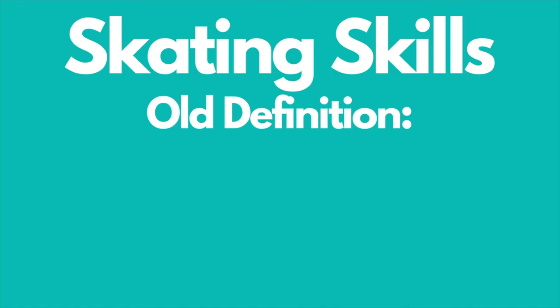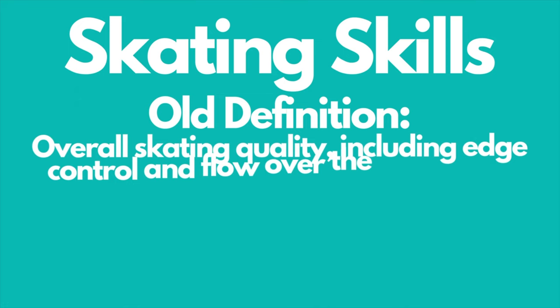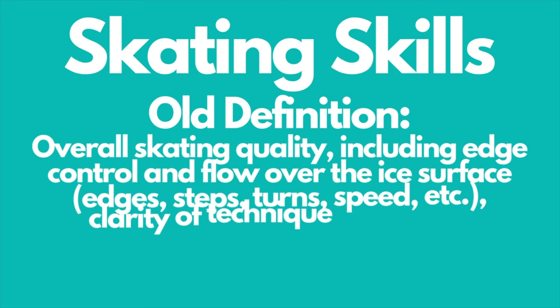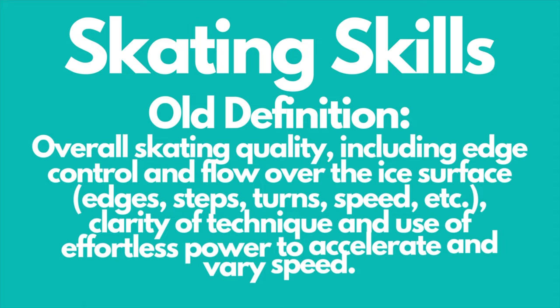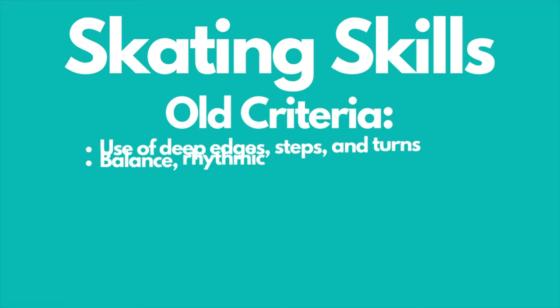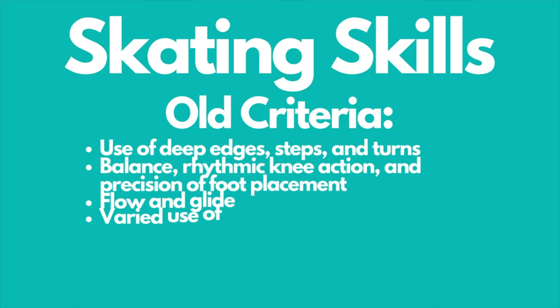Let's look at each component, starting with skating skills. The old definition of skating skills was overall cleanness and sureness, edge control and flow over the ice surface, demonstrated by a command of the skating vocabulary — edges, steps, turns, etc. — the clarity of technique and the use of effortless power to accelerate and vary speed. The old criteria were use of deep edges, steps and turns, balance, rhythmic knee action and precision of foot placement, flow and glide, varied use of power speed and acceleration, use of multi-directional skating, and use of one foot skating.